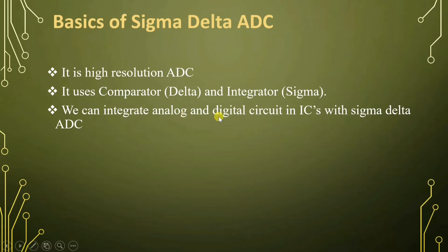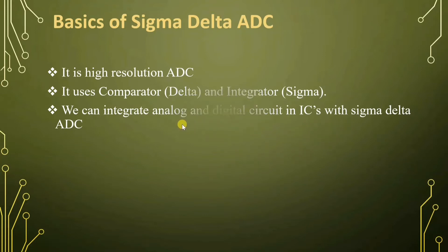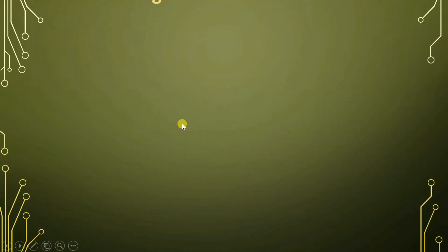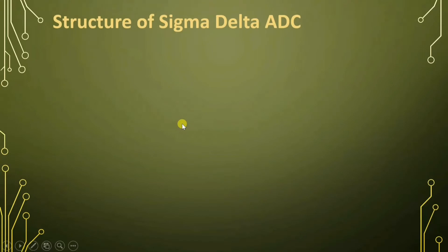In Sigma Delta ADC, we integrate analog and digital circuits in the same IC. So you'll find that analog components as well as digital components are integrated in the same IC using Sigma Delta ADC. So let us see the structure of the Sigma Delta ADC.